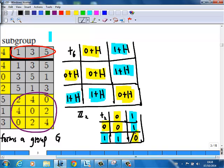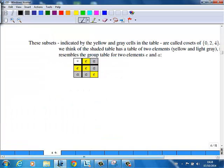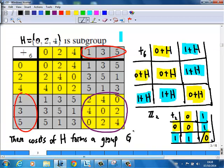It's just G slash H. The notation of this, we call it G slash H - quotient group.